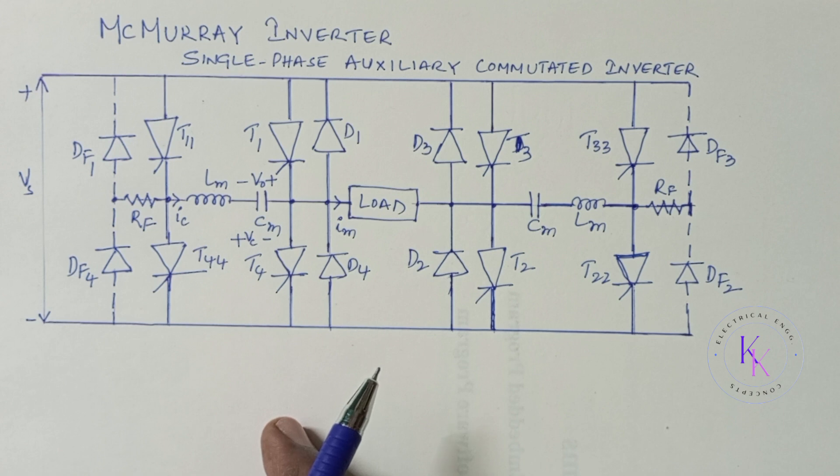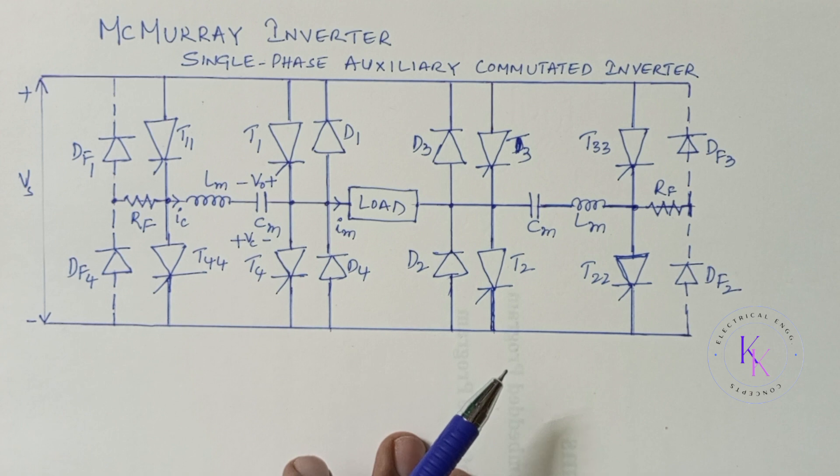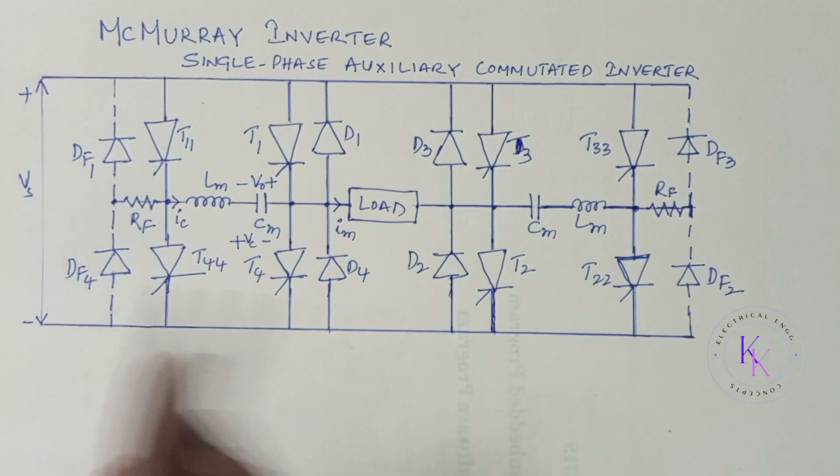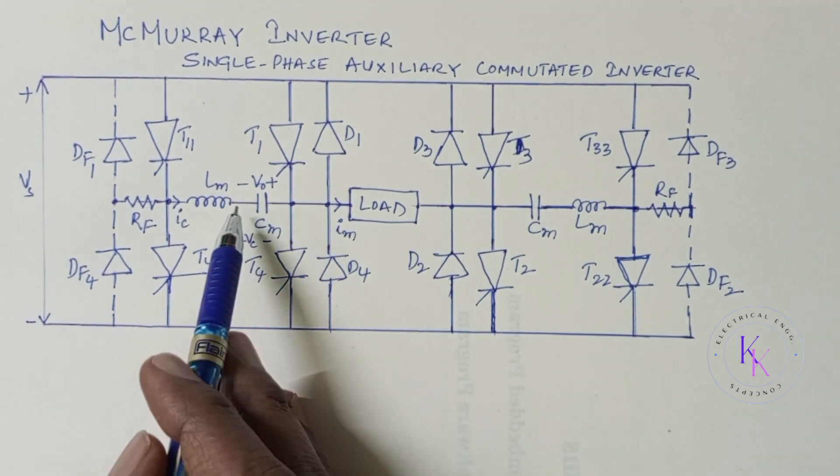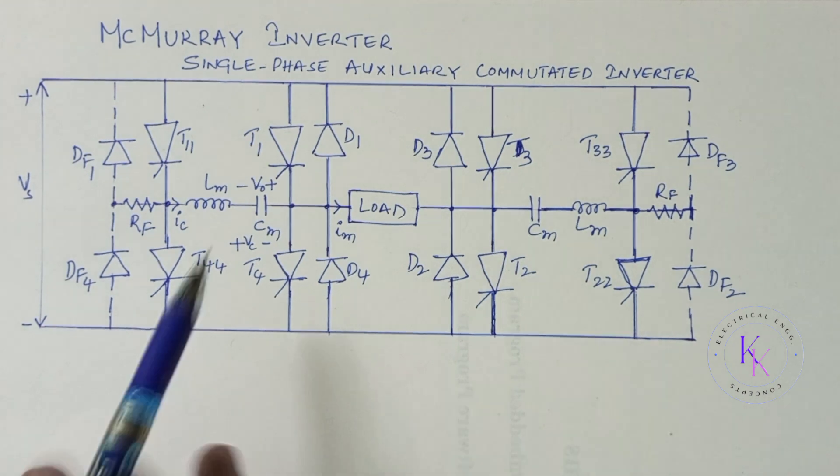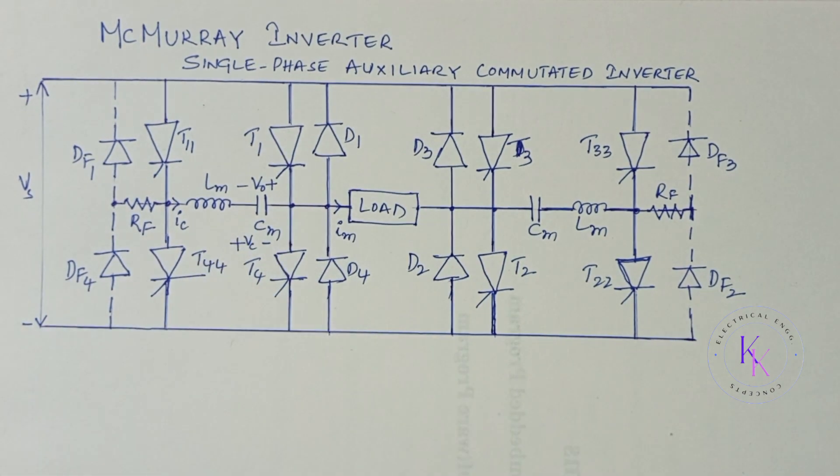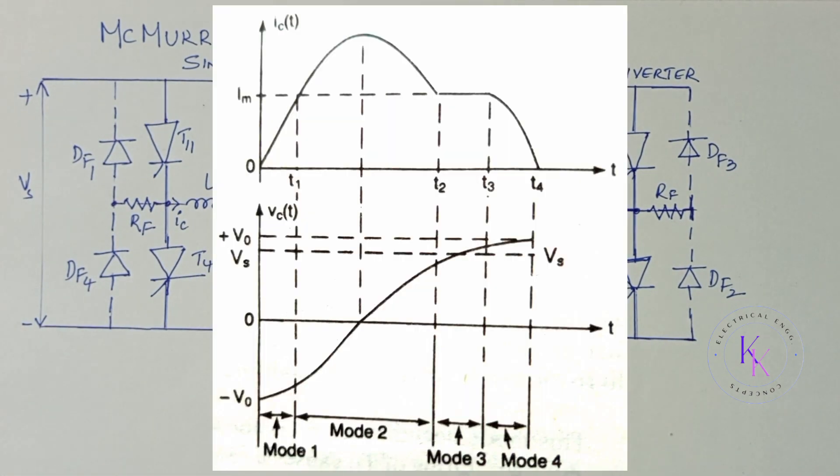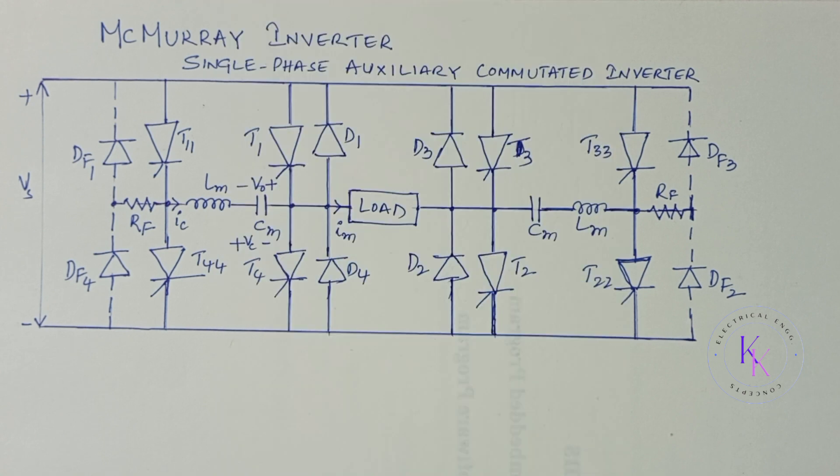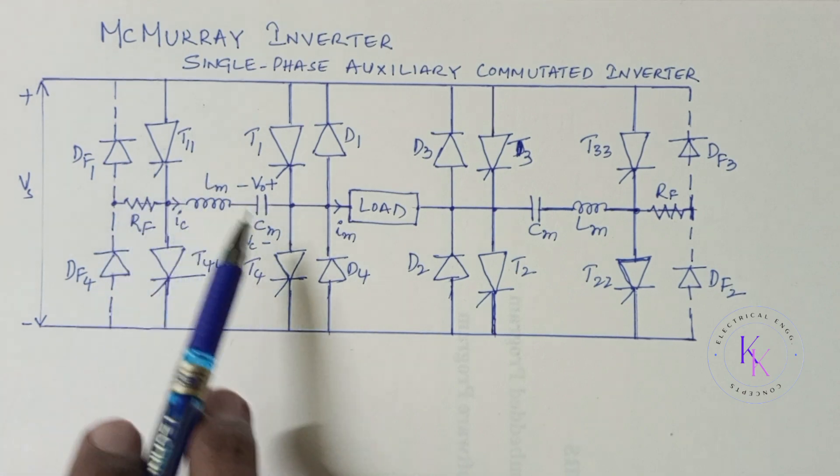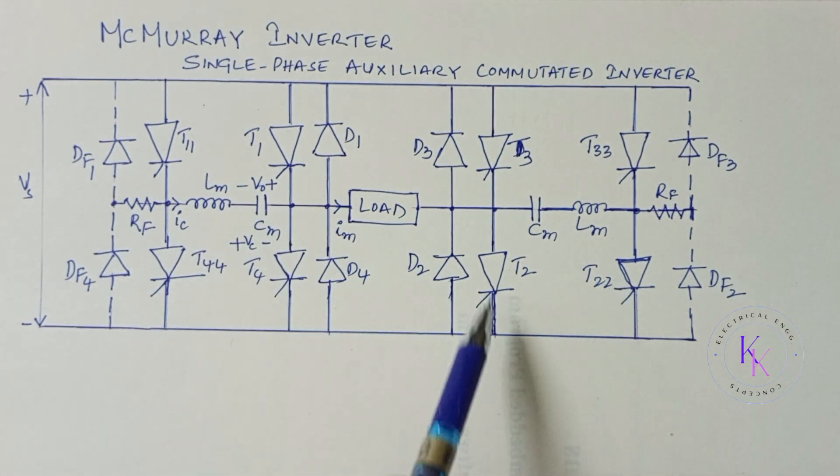A commutation circuit is shared by two thyristors here. Let us assume the thyristor T1 is conducting and supplying the peak load current of IM and the capacitor CM is charged to minus V naught with polarities as shown here. The waveform of the capacitor voltage and the currents are as shown here. In the initial stage, when the thyristor T1 is on, the supply is flowing through the load and getting back from the T2 to supply in positive half-cycle.